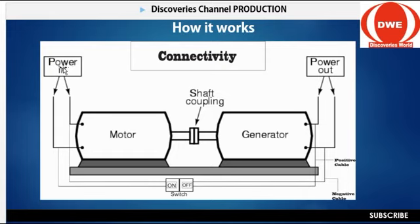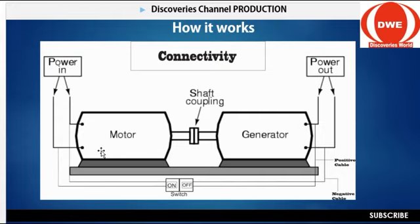I don't know if you understand the logic. I am going to produce a better video on this diagram and explain it in a more practical way. But for now, I just want you to have a picture of how a self-running generator works. Because many don't believe that this self-running generator exists. I want you to use this picture to understand the logic — the simple secret behind it. And if you understand the simple secret, you can produce any generator you want, even 50kVA, 200kVA — as many as possible.